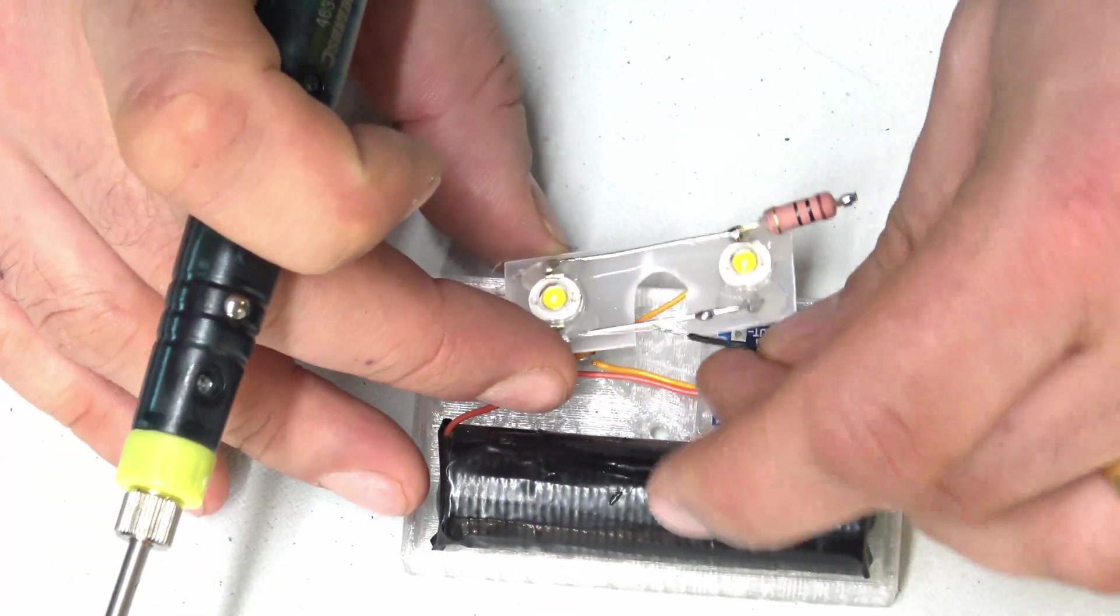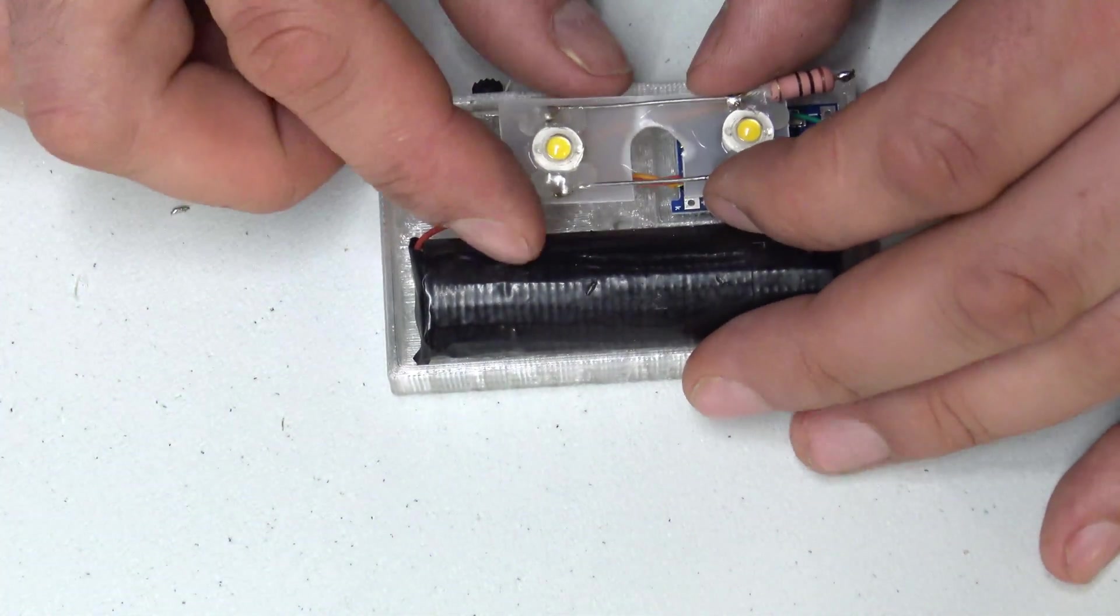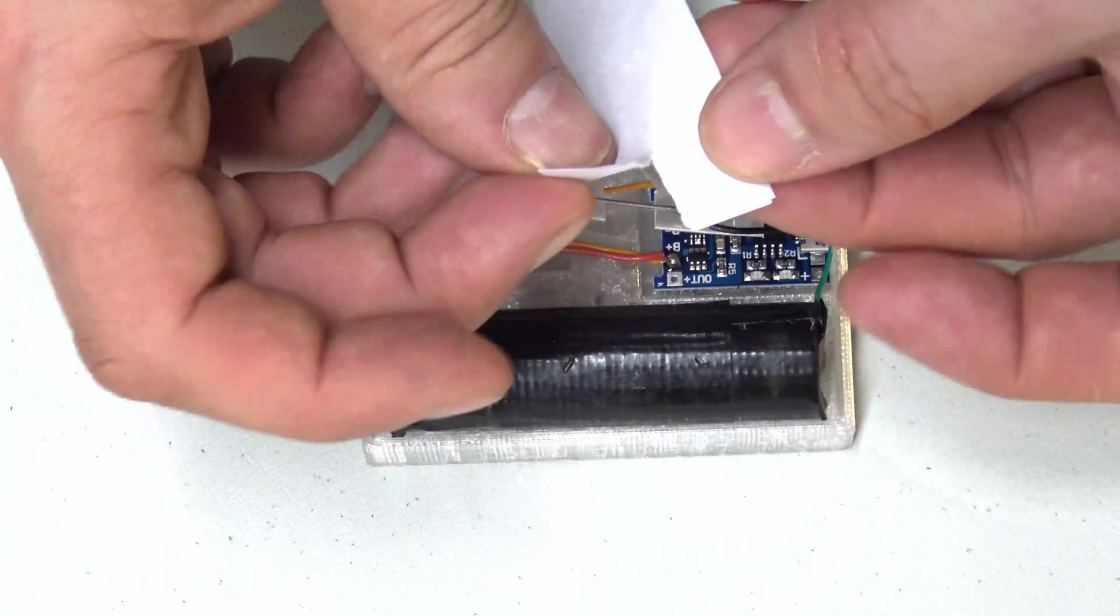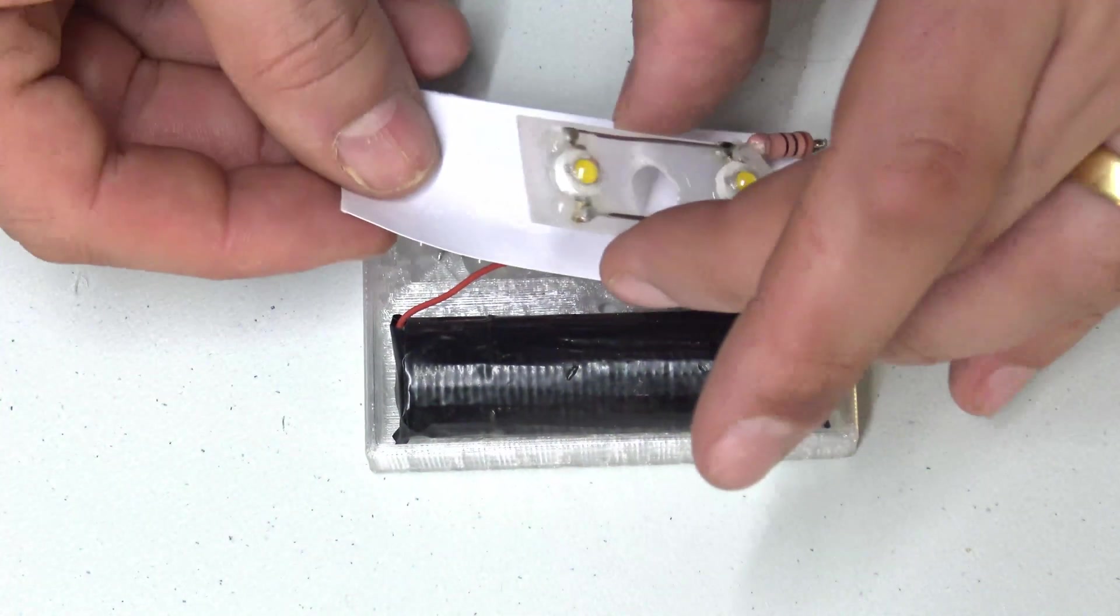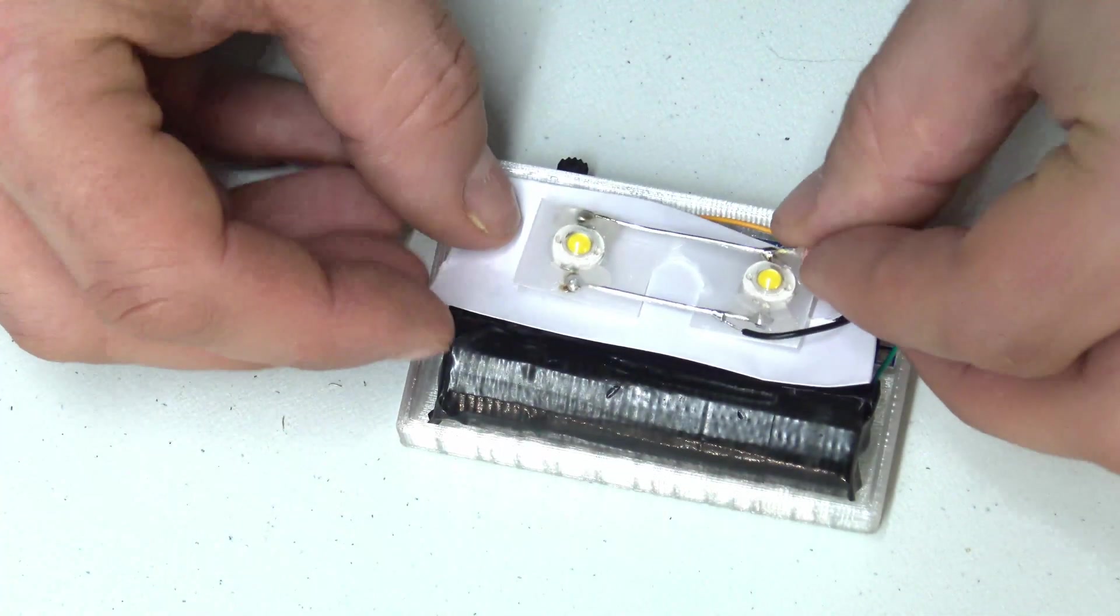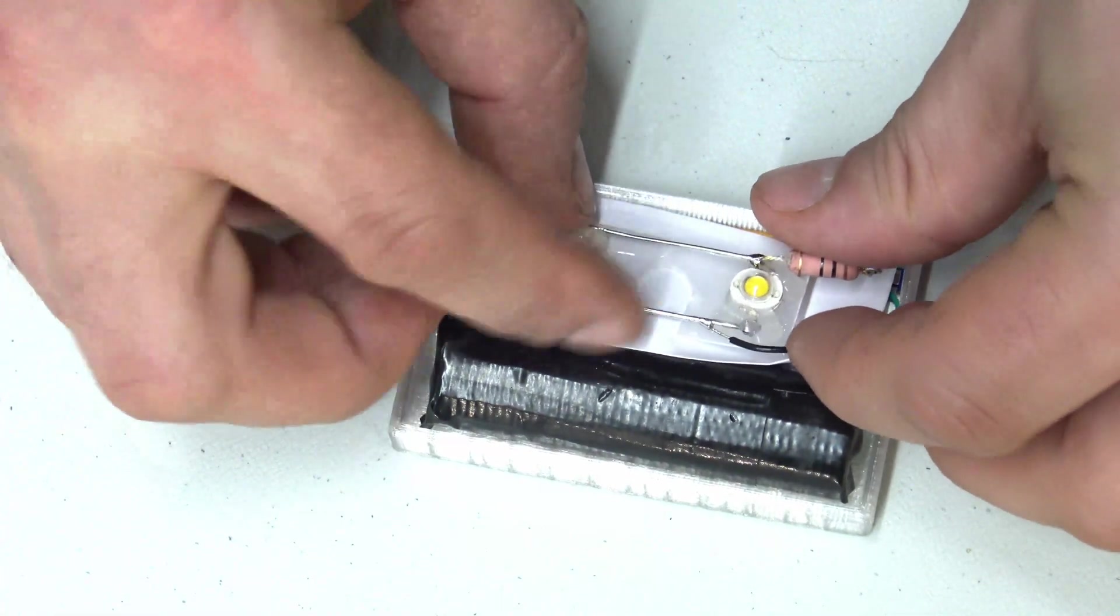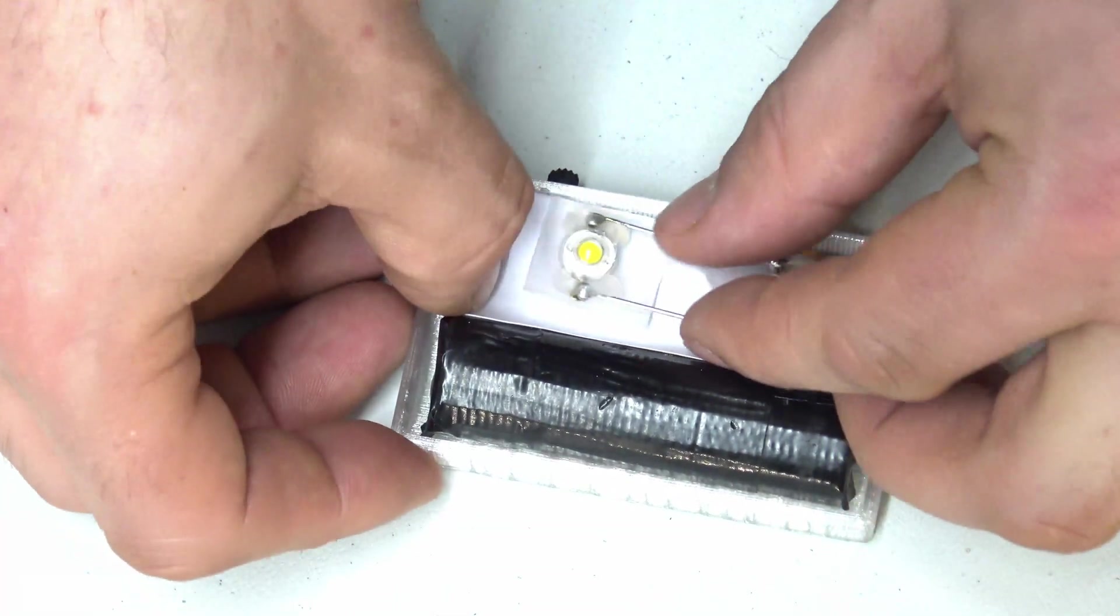And then what we can do is we can test this. Give it a test, make sure it all functions properly. And then what I did is I just popped a little bit of paper in there just to make sure, just to reduce the risk that anything might short. And also to encourage the reflection of the light in the direction that you want it.